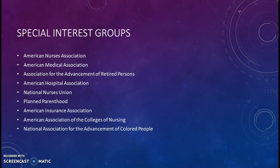Here's a list of some of the special interest groups — there are probably literally thousands of them. We have the American Nurses Association, American Medical Association, Association for the Advancement of Retired Persons (AARP), the American Hospital Association, the National Nurses Union, Planned Parenthood, American Insurance Association, American Association of the Colleges of Nursing, and the National Association for the Advancement of Colored People. All of these groups have some of their special interests in nursing, medicine, and hospital care.